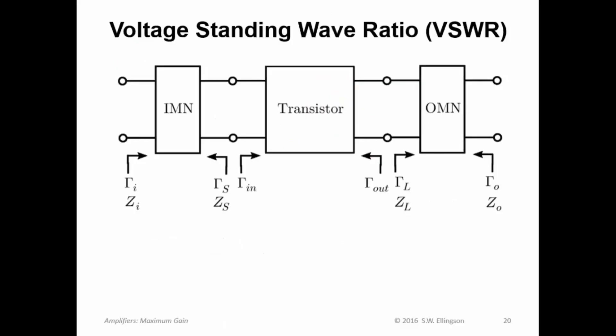All right, finally I want to talk about voltage standing wave ratio. Voltage standing wave ratio becomes an issue here because we've done nothing to constrain it to this point. So the VSWR, as far as we know, could be anything. So we need to know what that value is, and if it's too big, we're going to have to do something about that.